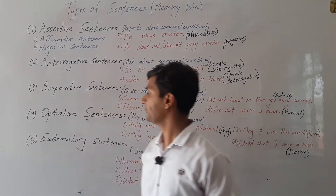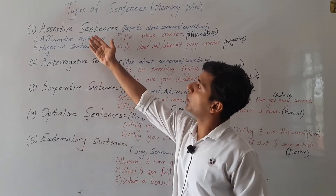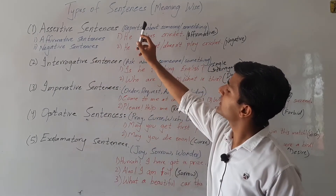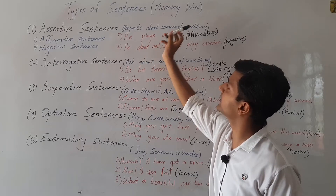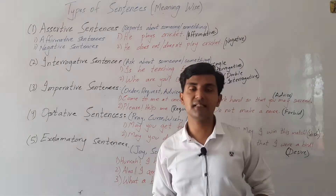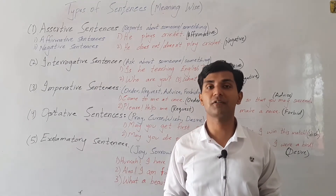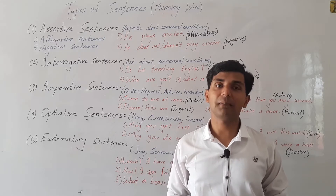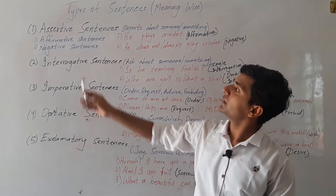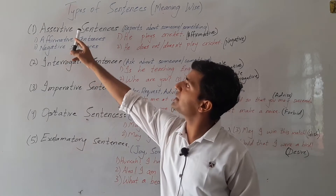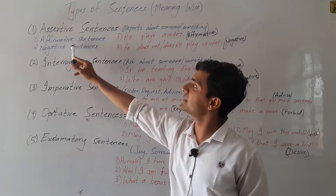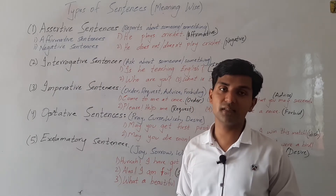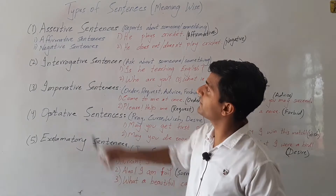So now we have to check what are assertive sentences. Assertive sentences means that they report about someone or something. Assertive sentences report us about some person, about something, about some happening, about the activity of some person. So assertive sentences consist of affirmative sentences as well as negative sentences. Both affirmative and negative sentences are part of assertive sentences.